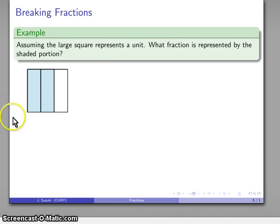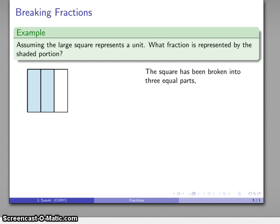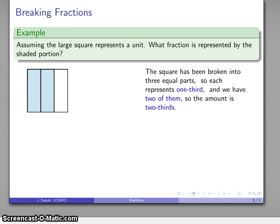For example, let's take a large square and we'll assume that this large square represents a single unit. Now how do I express the amount that is shaded? Let's go ahead and take this apart. First of all, we have to count. The square has been broken into one, two, three equal pieces, and so that means each piece is one-third. We'll say that each part is one-third. So each of these is one-third.